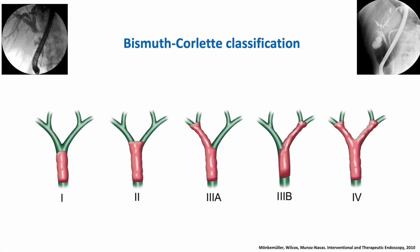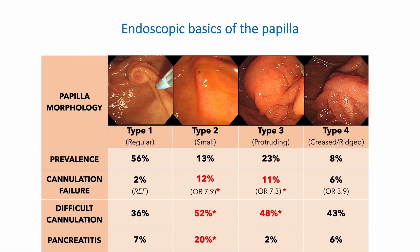You need to know your classifications for strictures and bile duct damage, such as Strasberg, as well as the Dubois classification for patients who have post liver transplant damage.